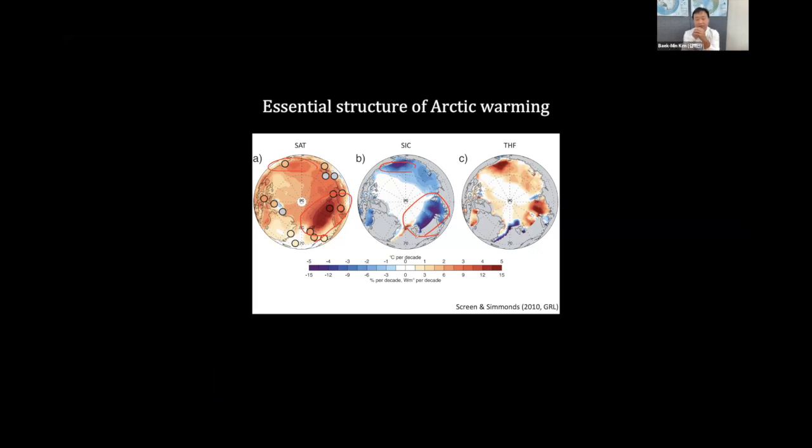And also interestingly, atmospheric scientists found that this region is related with a huge amount of heat released from the ocean. You can see here, we atmospheric scientists call it turbulent heat flux, THF. Turbulent heat flux is also matched with these two regions. We call this region Barents-Kara Sea, this is Chukchi Sea in the Arctic region. Why turbulent heat flux is very severe here has a clear reason.